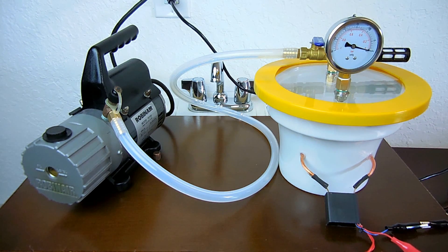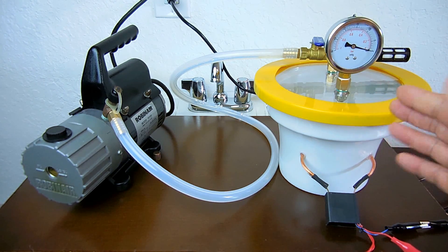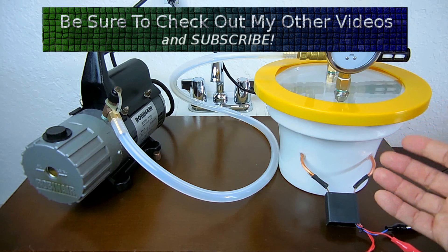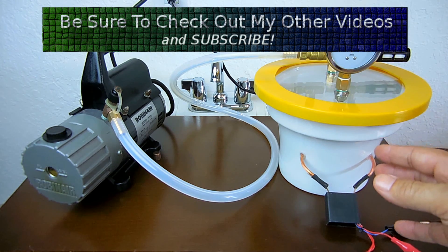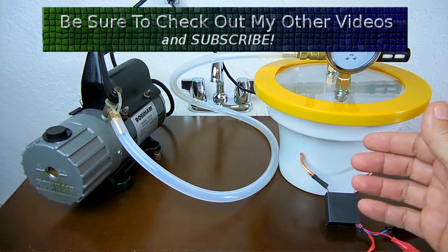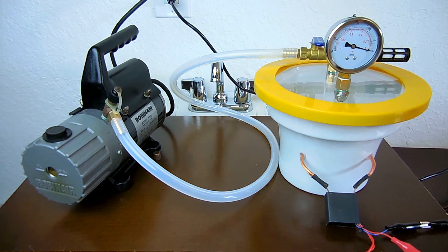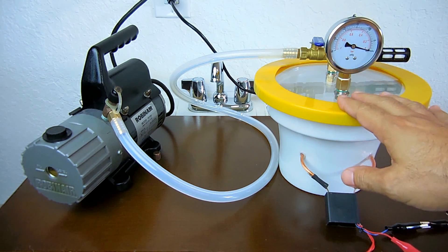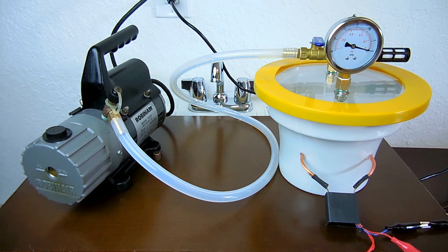Now the purpose of this experiment is to compare how a high voltage arc acts in a normal atmosphere inside the chamber with no vacuum applied, then compare it to when a vacuum is applied, and then once the vacuum has been applied I'm going to draw in only helium into the chamber and see how the arc reacts with helium.